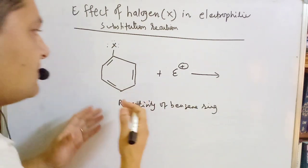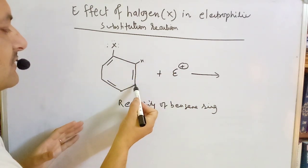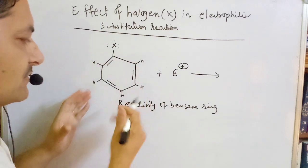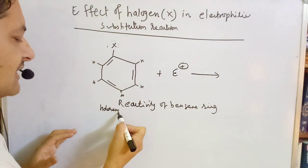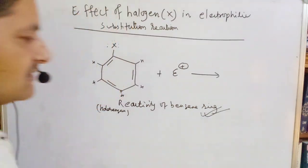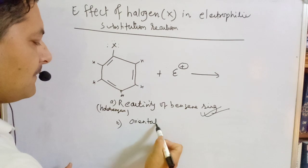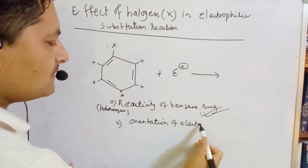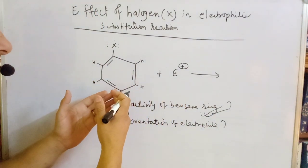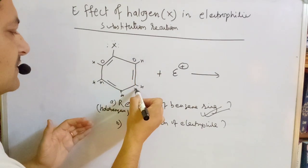In a benzene ring, there is an electrophilic aromatic substitution reaction. In this electrophilic aromatic substitution reaction, we discuss the reactivity of the benzene ring and the orientation of the electrophile — whether it attacks the ortho, meta, or para position.